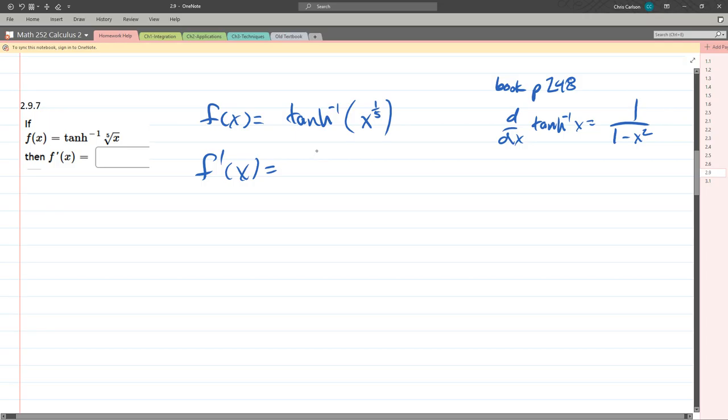Okay, so the derivative is 1 over 1 minus this thing squared. Times the chain rule. So chain rule. So we do derivative of x to the 1/5th.